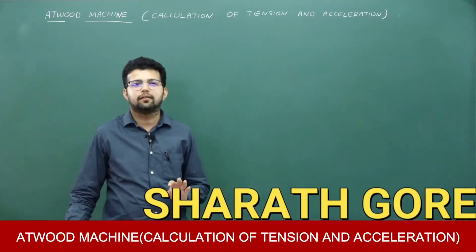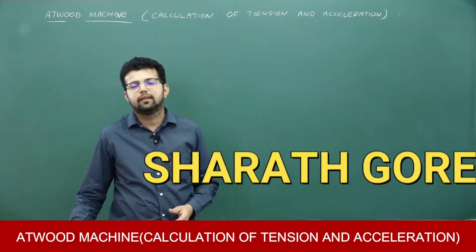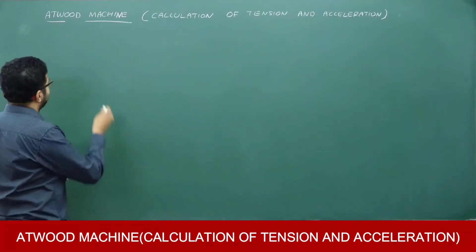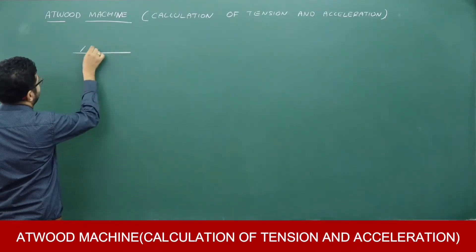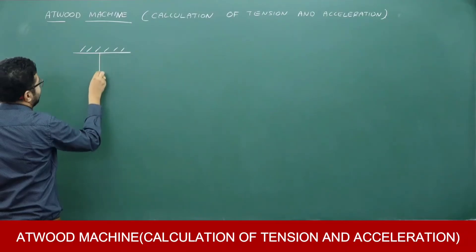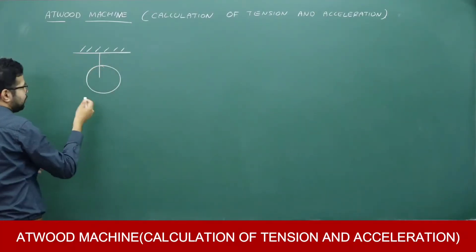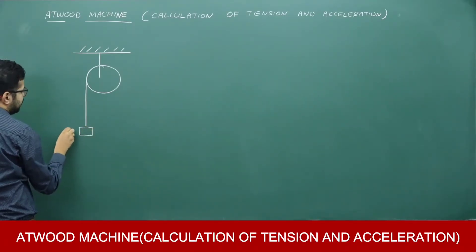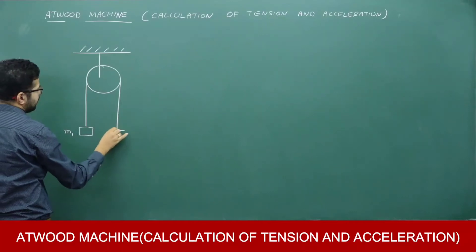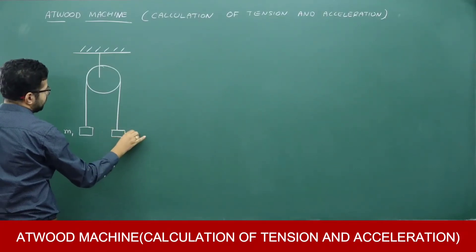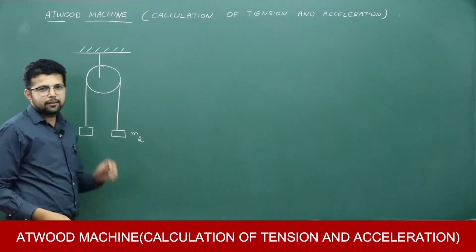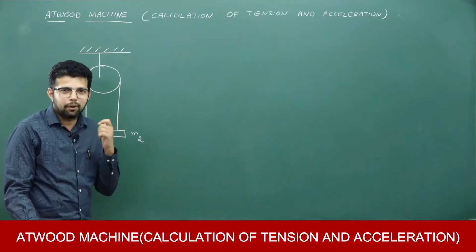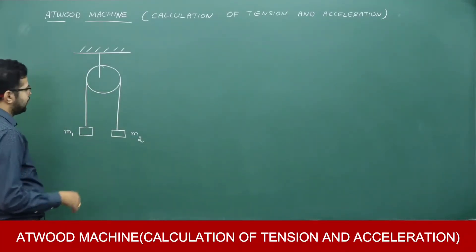Dear students, in this session we will see how to calculate tension and acceleration in the case of an Atwood machine. What is this Atwood machine? There is a pulley and two masses M1 and M2 are connected to this pulley. This particular situation is in the laws of motion chapter — in exercise problems there is a problem related to this. This is called the Atwood machine.